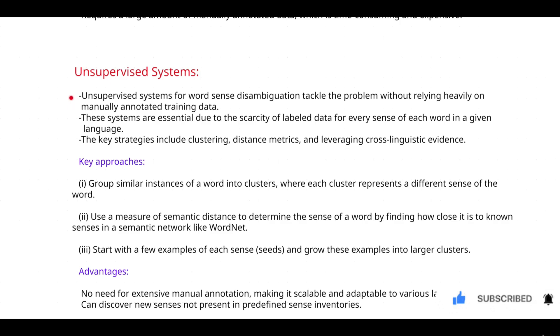So let's see the first point. Again, we discuss what is the main aim of these particular systems in order to tackle the problem of word sense disambiguation. The first point says that unsupervised systems for word sense disambiguation tackle the problem without relying heavily on manually annotated data. In supervised systems, those systems are highly dependent on human effort. But in unsupervised systems, there is no need for any algorithm to rely on human annotated data.